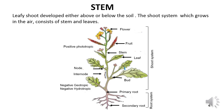Branches arise from axillary buds present in the axil of leaves; therefore, the development of branches is exogenous. The stem is negatively geotropic, meaning it grows above the soil. Negatively hydrotropic, meaning it moves away from water. And positively phototropic, meaning it moves toward the light.